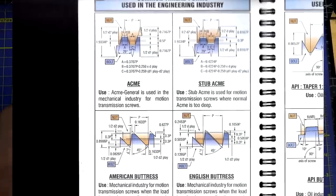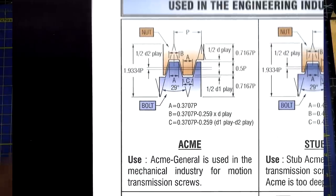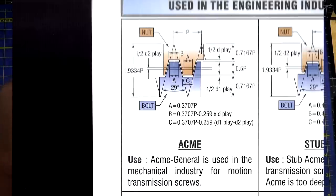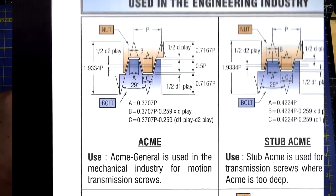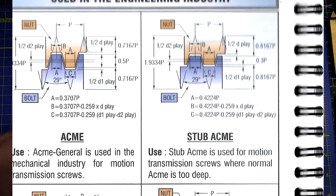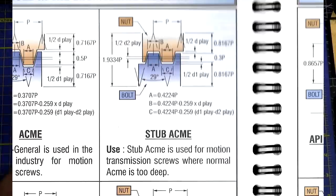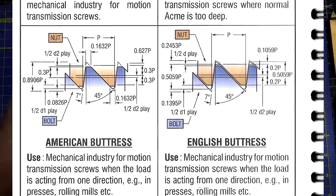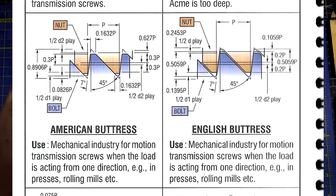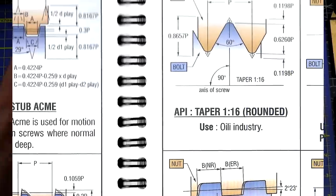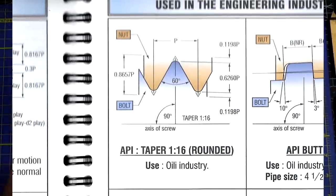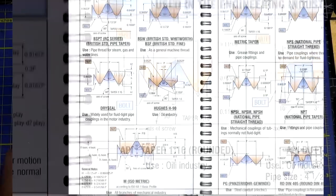Another thread type you might be familiar with as a machinist is the acme thread, because most lead screws are acme threads. A lot of times we call them trapezoidal, but there's a separate form called trapezoidal that has a slightly different shape. The acme thread has a 29-degree angle instead of a 60-degree angle. There are also stub acme — a shorter variation — buttress threads, which are stronger on one side and designed when force only goes one way, and API threads which are round on the bottom.